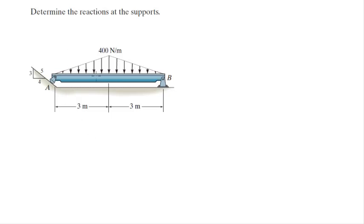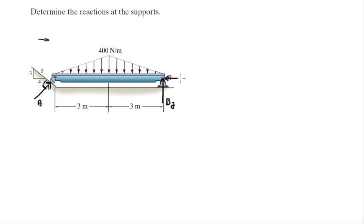As you can see, you have this distributed load, and B is anchored so it's going to have a reaction going up — let's call it BY. A is not anchored so it can only have a reaction going this way. This angle here is 90 degrees — that's important. Since A is going up and towards the right, it is pretty obvious that BX is going to go towards the left.